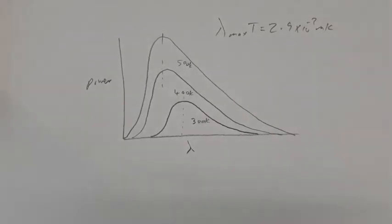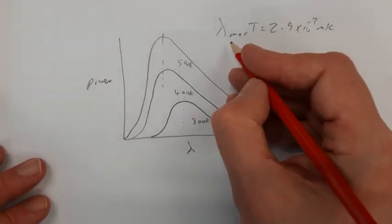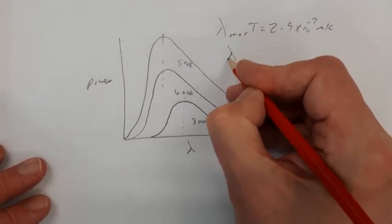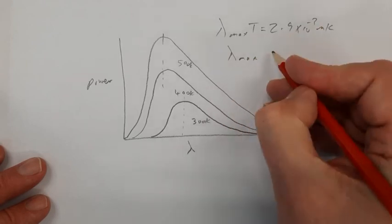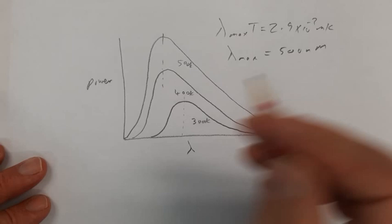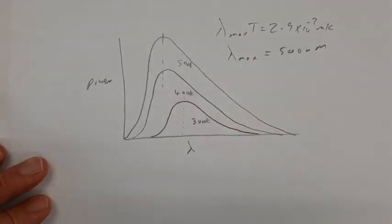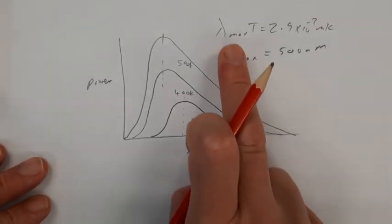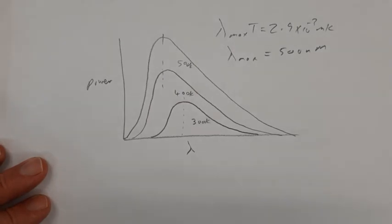And we're now going to apply that equation to work out roughly how hot the surface of the sun is. Because we can find lambda max for the sun by analysing the spectrum. And we get about 500 nanometres. So we can substitute that into that equation. And then we should get a temperature. So my suggestion is you pause the video and you now actually do that calculation.